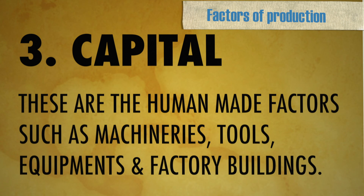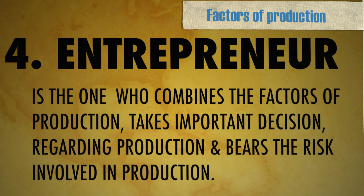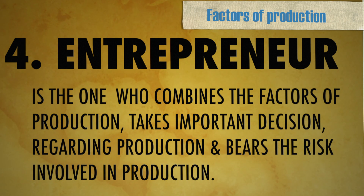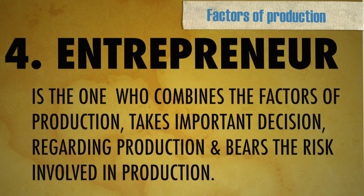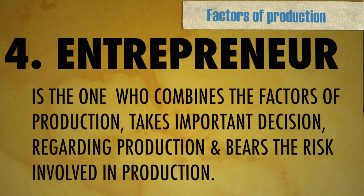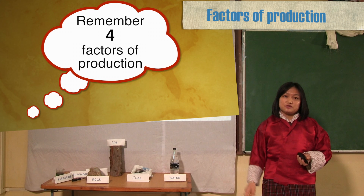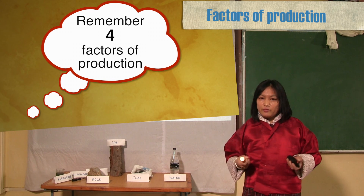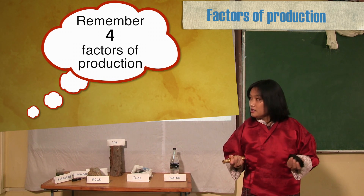The last one, and the most important one, is entrepreneur. Entrepreneur is the one who combines all the factors of production — land, labor, and capital — and makes the important decisions in the firm and bears all the risks involved in the production. Entrepreneur is the most important factor of production, not undermining land, labor, and capital. You should remember that all four factors of production are equally important in economics and equally important for the firm and the producers.